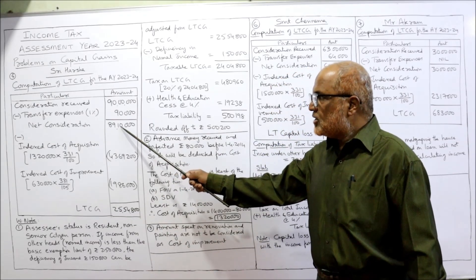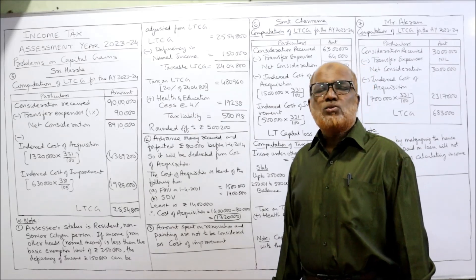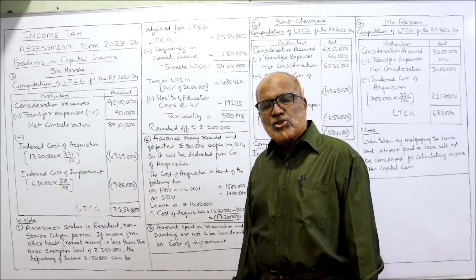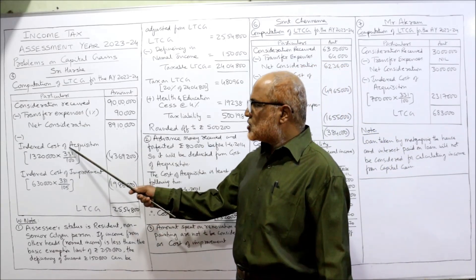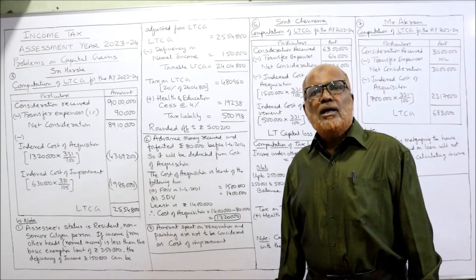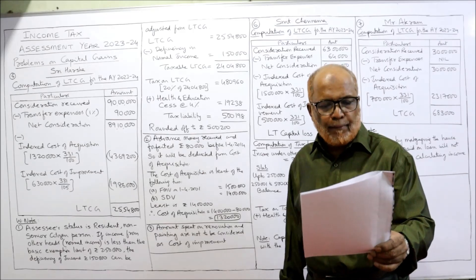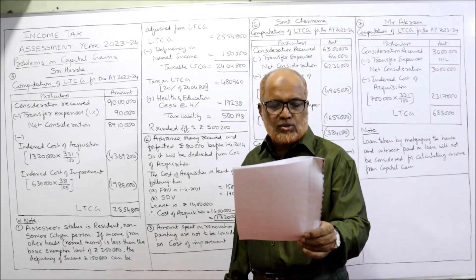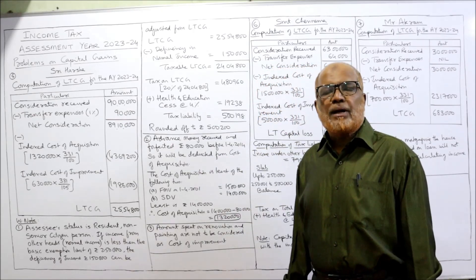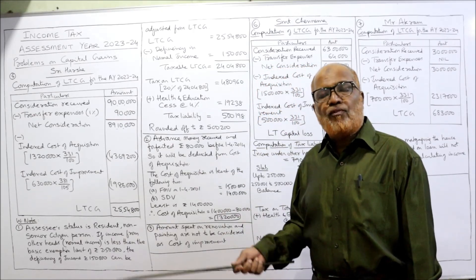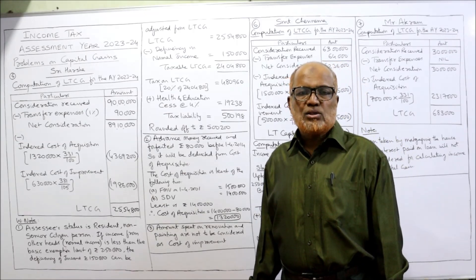Net consideration is Rs. 89,10,000. From this, we deduct indexed cost of acquisition and indexed cost of improvement. For indexed cost of acquisition: the lower of FMV Rs. 15,00,000 and stamp duty value Rs. 14,00,000 is Rs. 14,00,000. The house was constructed 40 years back — that means before 1st April 2001 — so we have to consider FMV, not the actual cost.